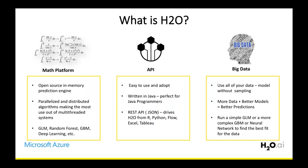What is H2O? H2O is three things at once. It is an in-memory machine learning platform at its core — open source, parallelized, and distributed. We've taken common statistical learning algorithms like GLM, Random Forest, GBM, and Deep Learning and implemented them in a parallelized and distributed manner, so the math scales pretty much linearly as data size increases. This enables complex, accurate math to run in a really performant fashion.